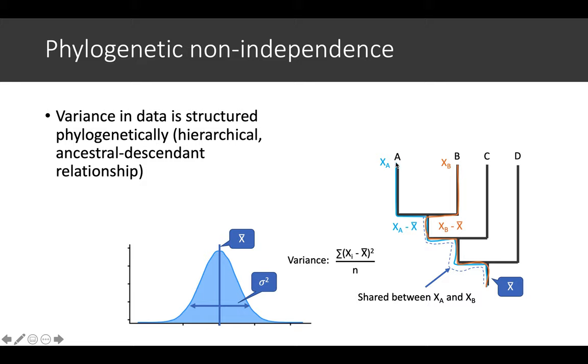So the individual differences between the tips and the root is x_a minus x-bar. But if you look at this, if you compare x_a and x_b, x_a minus x-bar and x_b minus x-bar, this bit is actually redundant, so you're counting this bit twice.